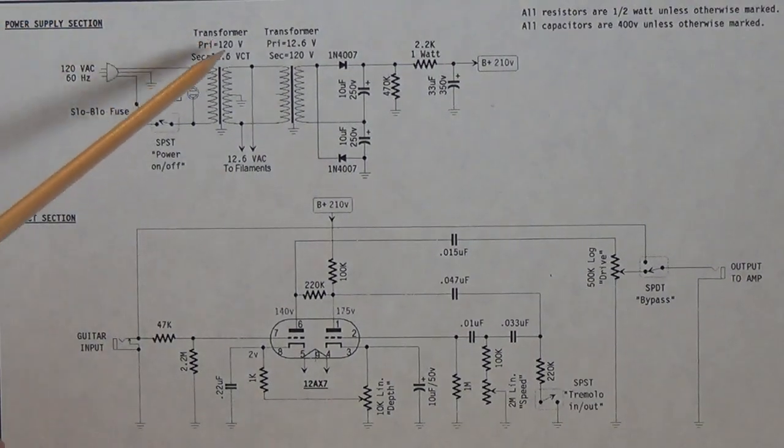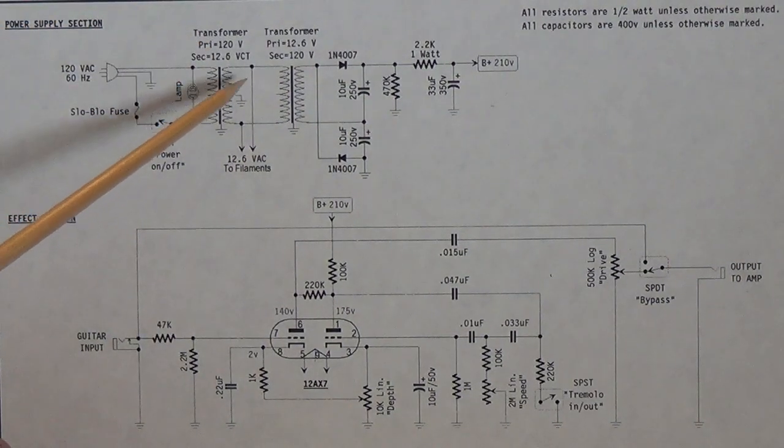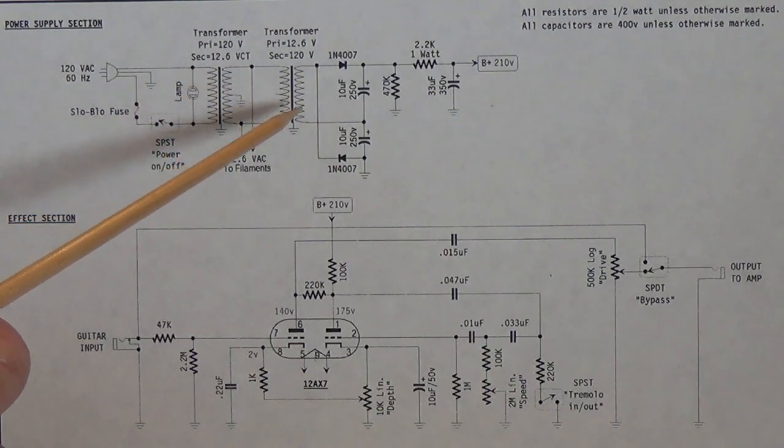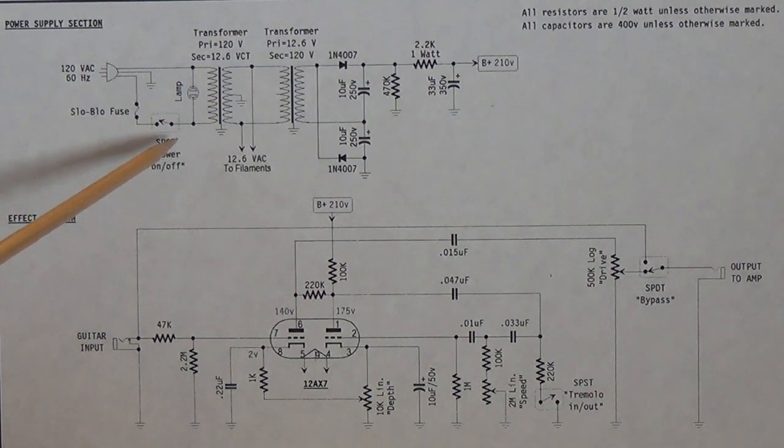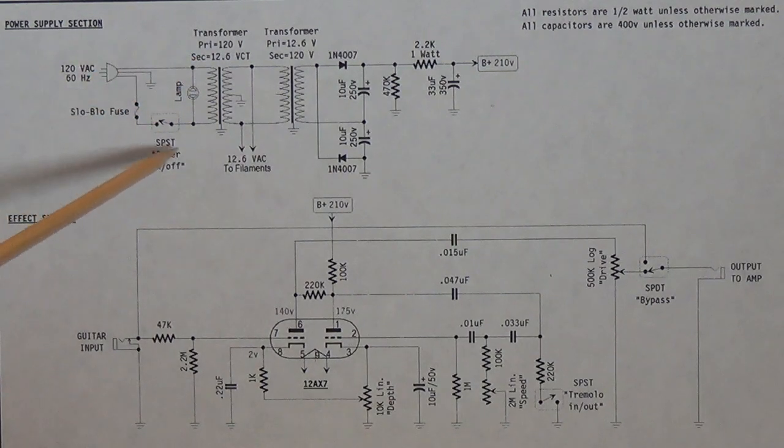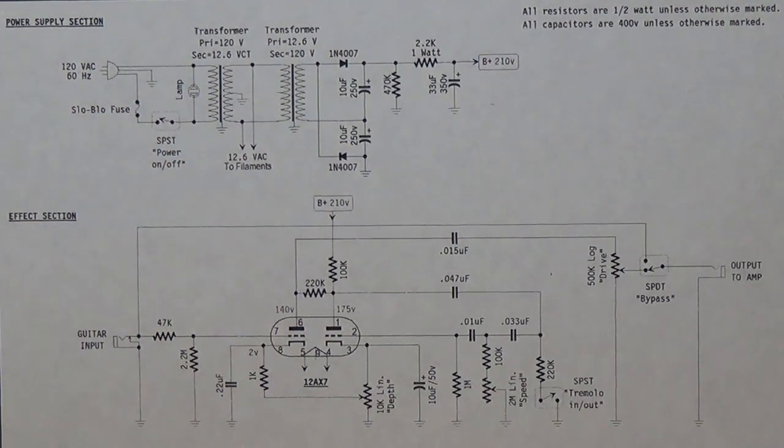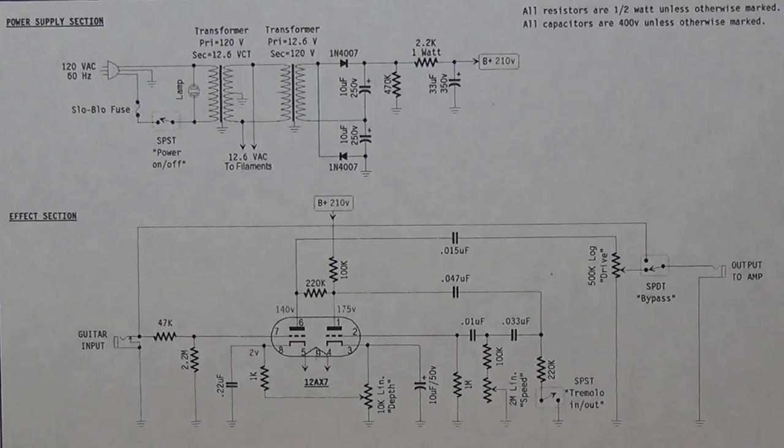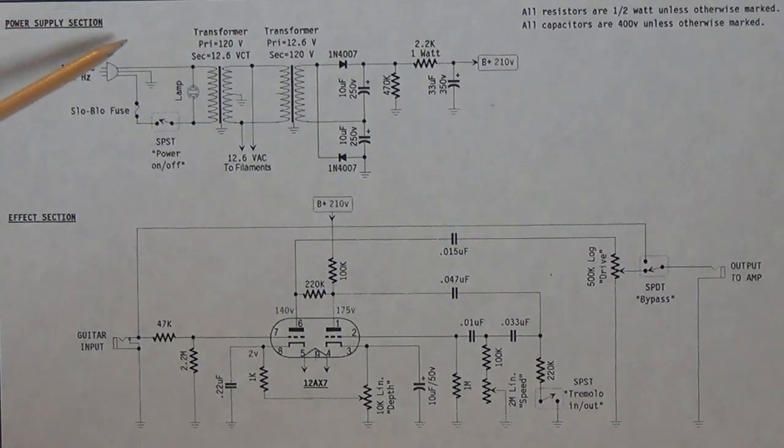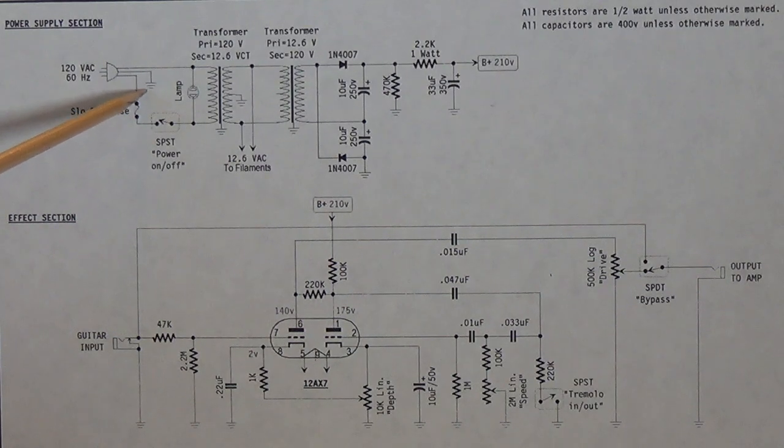Here are the two 12 to 120 volt transformers and also added is a pilot lamp, a single pole single throw on-off switch and a fuse to the primary circuit. Be sure you use a three wire grounded power cord with the green wire securely connected to the chassis.